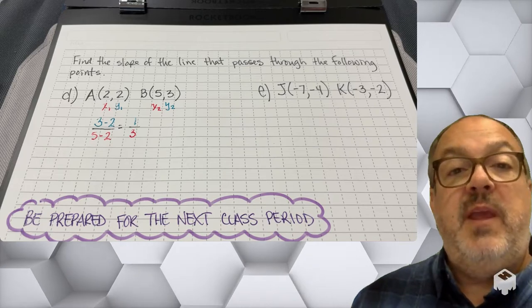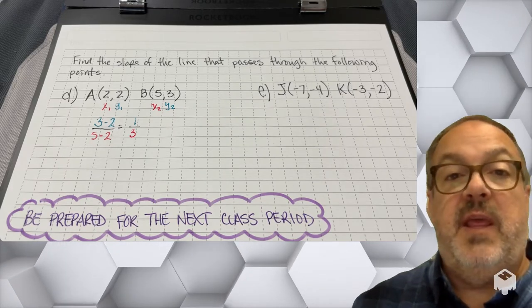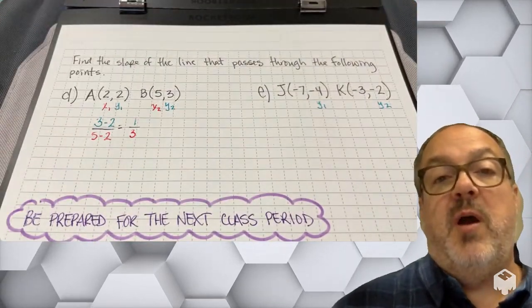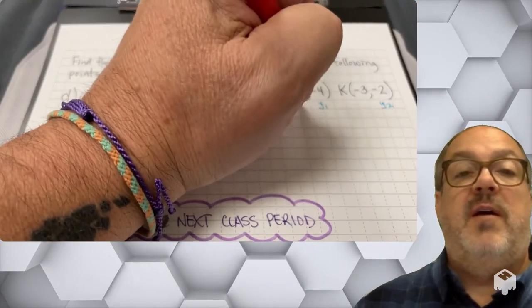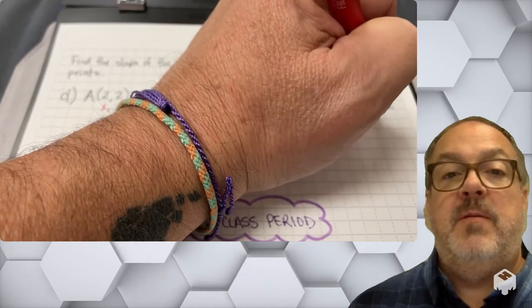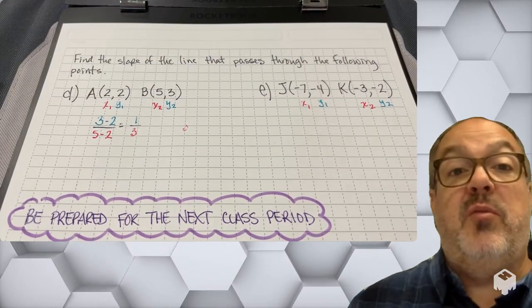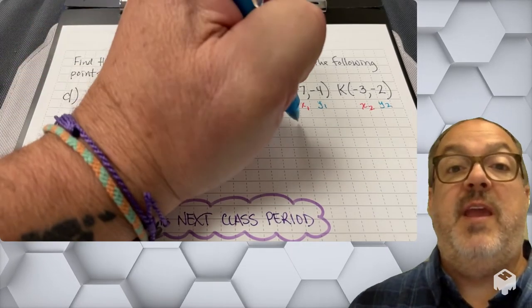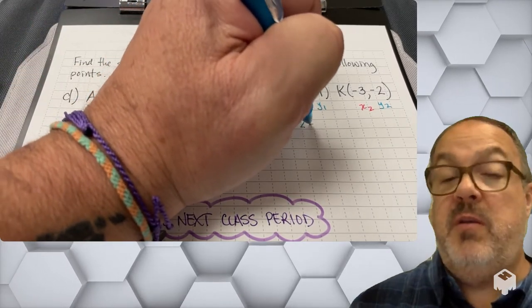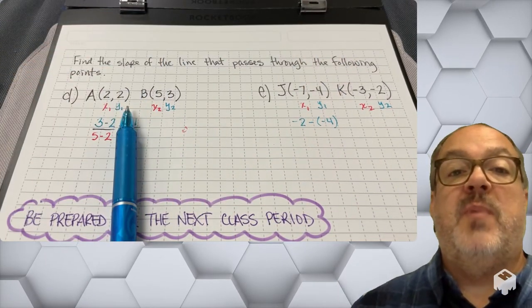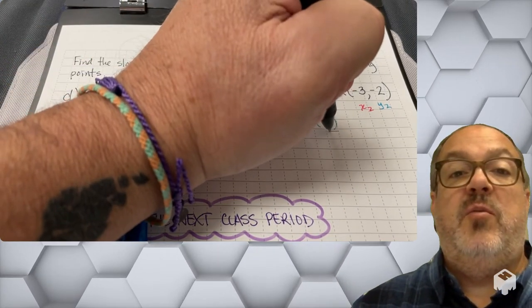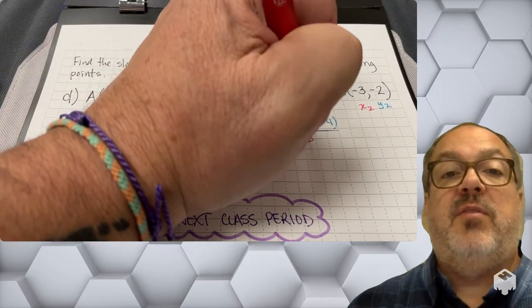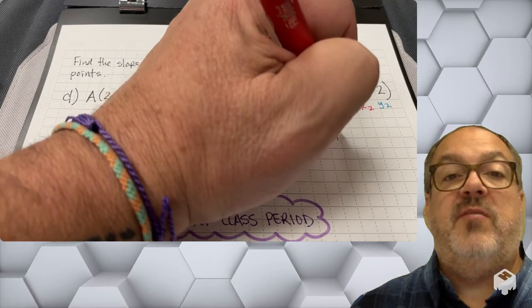In problem E, I'm going to go ahead and label my coordinates, my x1 and x2, and my y1 and y2. If you labeled J as x2, y2, and K as x1, y1, you will still get the same slope. So I'll have -2 minus -4 over -3 minus -7.